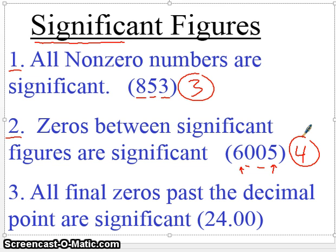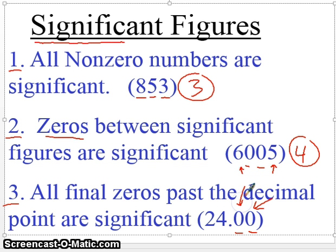Rules three, four, and five actually deal with zeros, so zeros are going to be the big discussion. Some zeros are significant; other zeros are not. Rule three says that all final zeros past the decimal point are significant. These two zeros are significant essentially because, say, if you were to measure a mass and the mass was 24.00, these are significant because you're saying you know the tenth and the hundredths place to be exactly zero. That's why you write them down after the decimal place — your instrument has given them to you. So these are significant, and we've got four significant digits there.